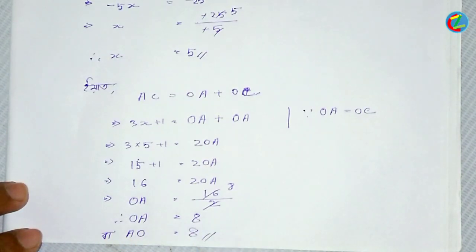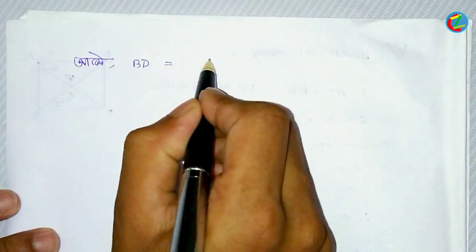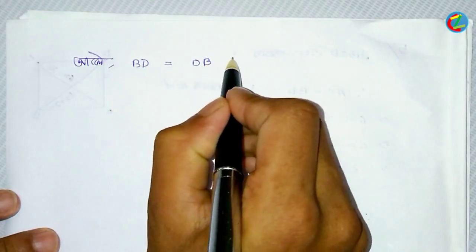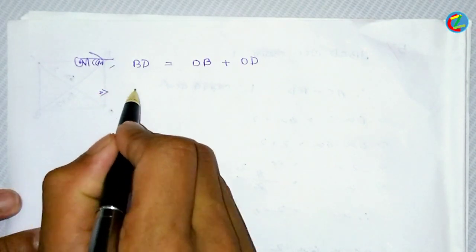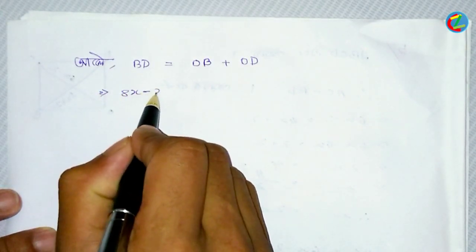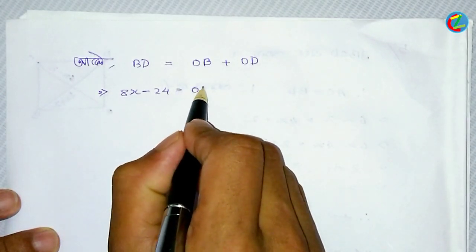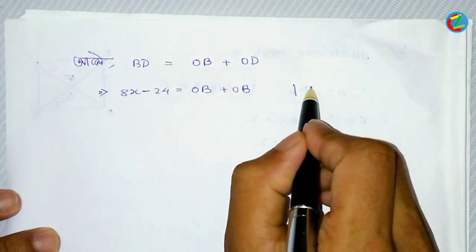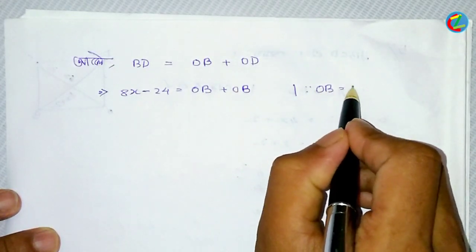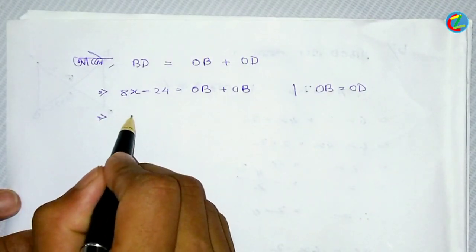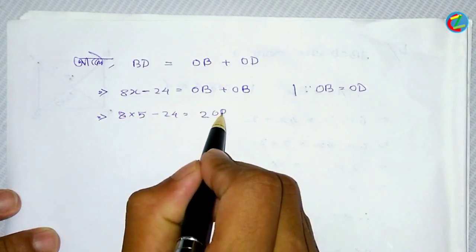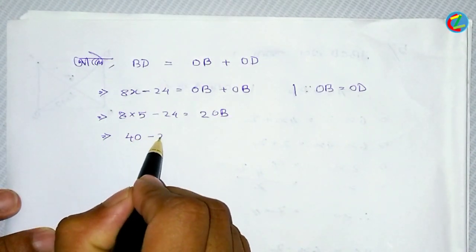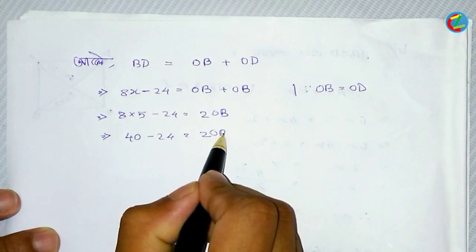It is only 80. OB plus OD is equal to OB plus OD; it is equal to OB plus BD. OB plus OD is equal to OB. OB plus OB plus OD, 16 minus 24 by 12, OB plus OD.